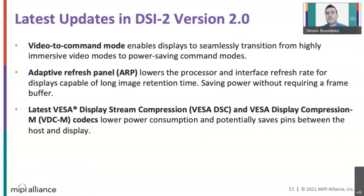ARP — Adaptive Refresh Panel — is a new operating mode that allows lowering the processor and interface refresh rate dynamically. When the display panel is capable of long image retention, it is allowed to save even more power and removes the need for a frame buffer in the display peripheral. Finally, DSI-2 2.0 was updated to refer to the latest VESA DSC 1.2 and VDCM 1.2 specifications.